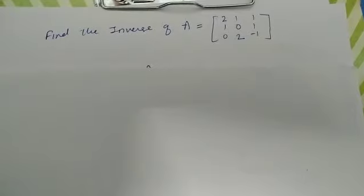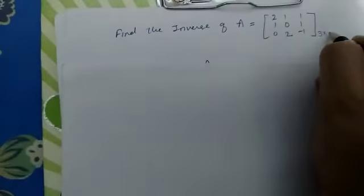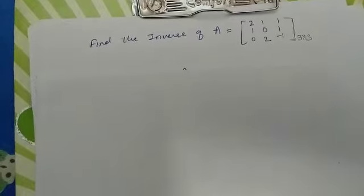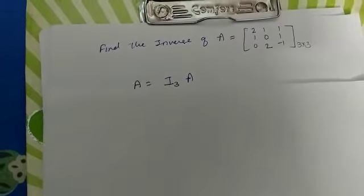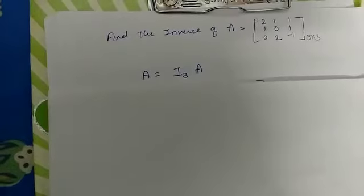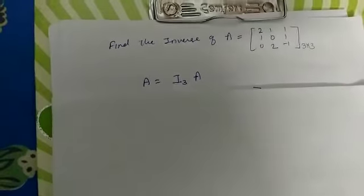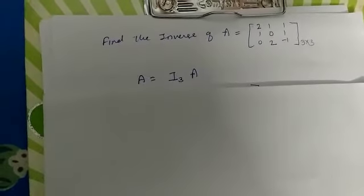Hello students, this is my second video. Now we are going to find the inverse of a matrix A. Whatever we have learned till now is to be used for finding the inverse of matrix A. Here we have a 3x3 matrix whose elements are 2, 1, 1, 1, 0, 1, 0, 2, minus 1. The first step to find the inverse of a matrix is to write this matrix A as A equals I₃A, where I₃ is a unit matrix whose order is the same as the given matrix, which is 3x3.